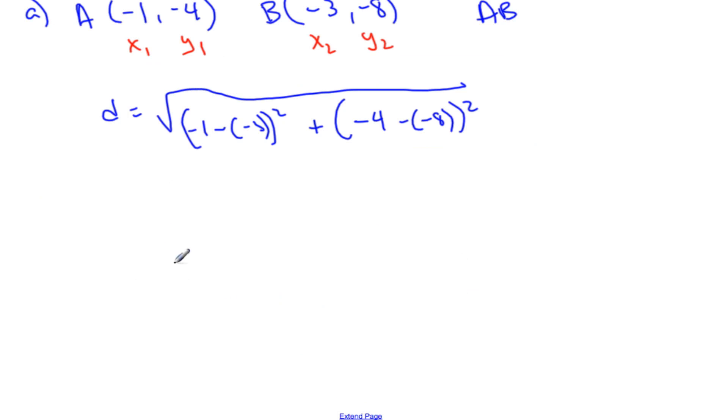Alright. So what do we end up with here? Negative 1, take away negative 3. So that's going to be 2. 2 squared. And then negative 4, take away negative 8 is 4. So 4 squared. Which is 4 plus 16. Which is square root of 20. Now we've been working with square roots. We know how to simplify that. That we know is root 4 times root 5. Which is 2 root 5. That's the distance between point A and B. Very nice.